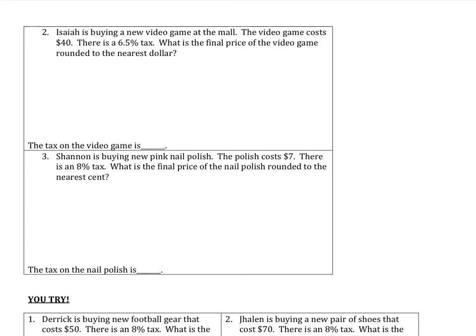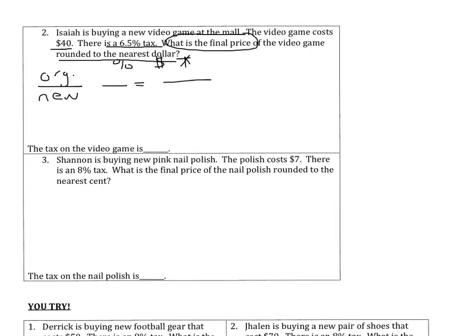Isaiah is buying a new video game at the mall. The video game costs $40 and there is 6.5% tax. What is the final price of the video game rounded to the nearest dollar? We've got to remember our final answer needs to be rounded. I'm going to set up my proportion with original over new, percent in the first column and dollar amount in the second column.